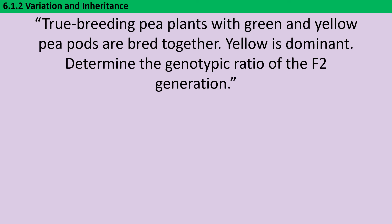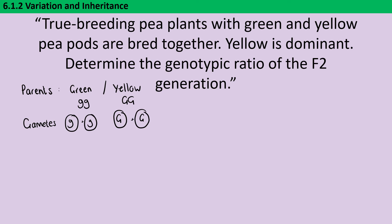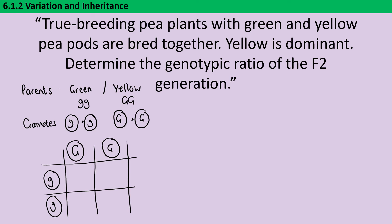In this question we complete a genetic cross between two pea plants — one with green pea pods and one with yellow pea pods. The plants are described as true breeding, meaning that if they self-fertilise they keep producing offspring with the same phenotype, which is a shorthand for saying they must be homozygous. Because Y looks similar as a capital and lowercase letter, we use G for this cross even though yellow is stated as dominant. The green parent is homozygous recessive (gg) and the yellow parent is homozygous dominant (GG). All offspring of that first cross are heterozygous — the F1 generation.